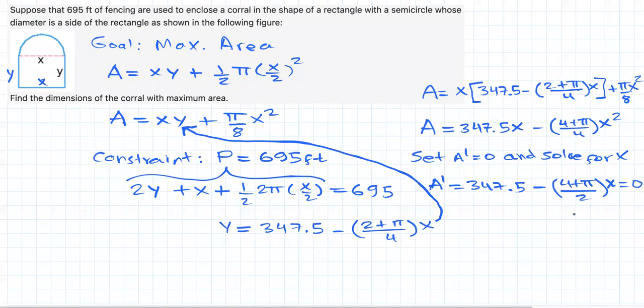Now, solving this for x, we're going to get that x is equal to 194.63 feet, okay? Rounding to two decimal places. Great.